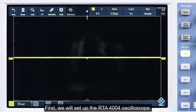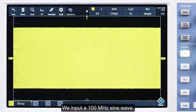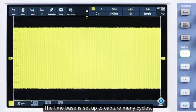First, we will set up the RTA 4004 oscilloscope. We input a 100 MHz sine wave. The time base is set up to capture many cycles.